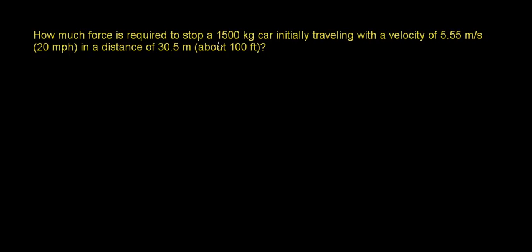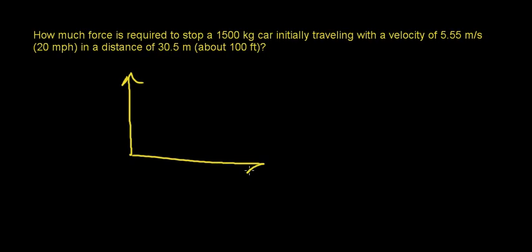In this video, we're going to try to figure out how much force is required to stop a 1500 kilogram car initially traveling with a velocity of 5.5 meters per second in a distance of 30 meters. We're going to combine kinematics with Newton's second law of motion. To begin, let's draw a coordinate system so we can see what's happening within this problem.